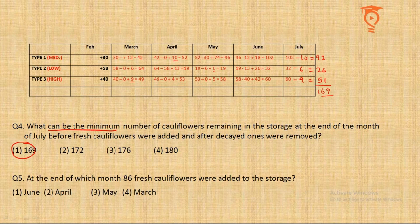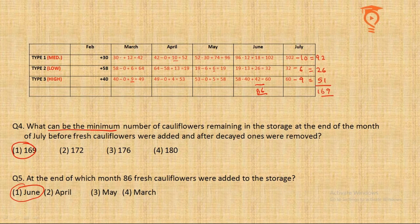Question 5 — at the end of which month were 86 cauliflowers added? We already found this: the sum of new additions across all types at the end of June equals 86. So at the end of June, 86 cauliflowers were added to the storage.